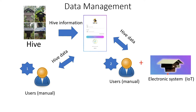The second mode is the IoT-enabled lateral connection, where hive data comes from both the user and an electronic hardware system. IoT data collection involves the use of sensors — like weight sensors, temperature sensors, humidity sensors — to track the performance of every hive connected to the Internet of Things. Sensors collect and transmit real-time data that is stored and retrieved at any moment.